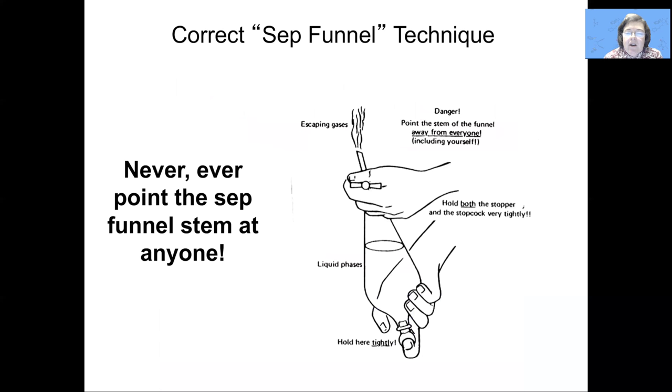When you're using your separatory funnel and venting, it's really important that you point the end, the stem of the separatory funnel when you're venting, away from people. That includes yourself and other people. You don't want any stream of material that's suddenly expelled due to a pressure buildup to blow out of the end and hit somebody. So it's very important that you use a separatory funnel in a proper location, ideally a fume hood, and that you make sure it's not pointing towards anyone.